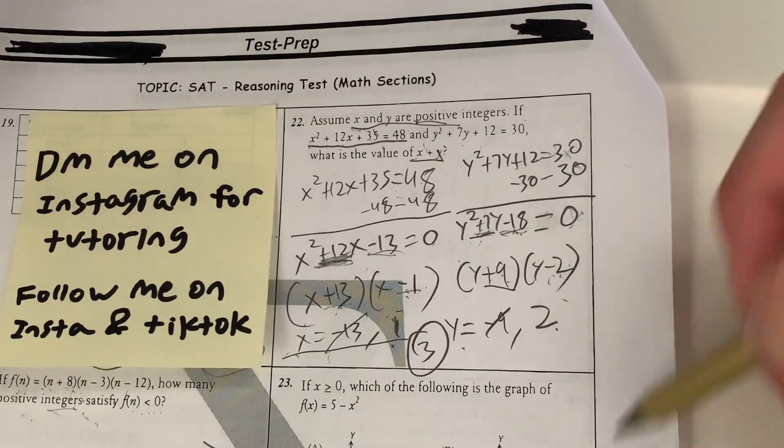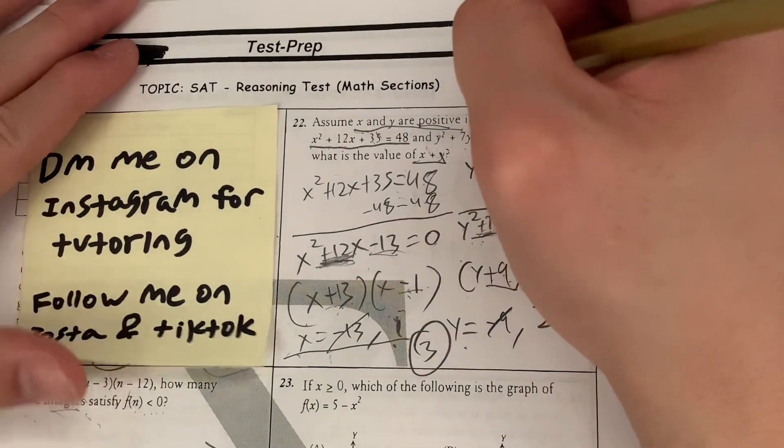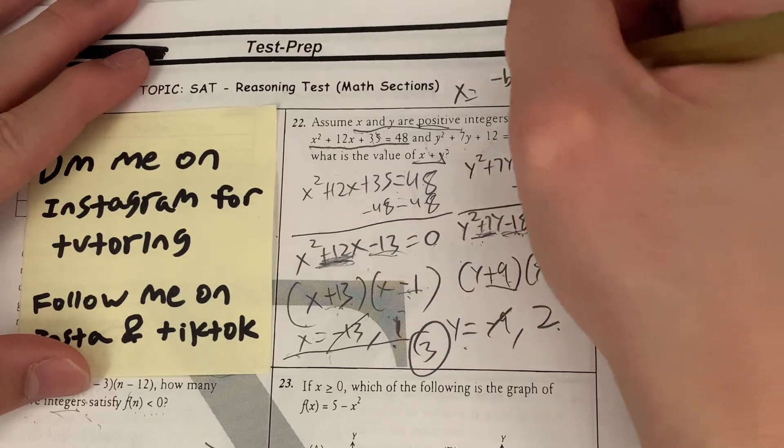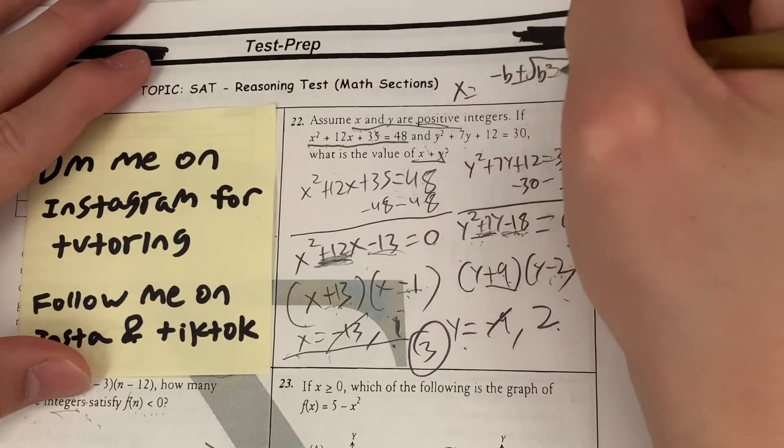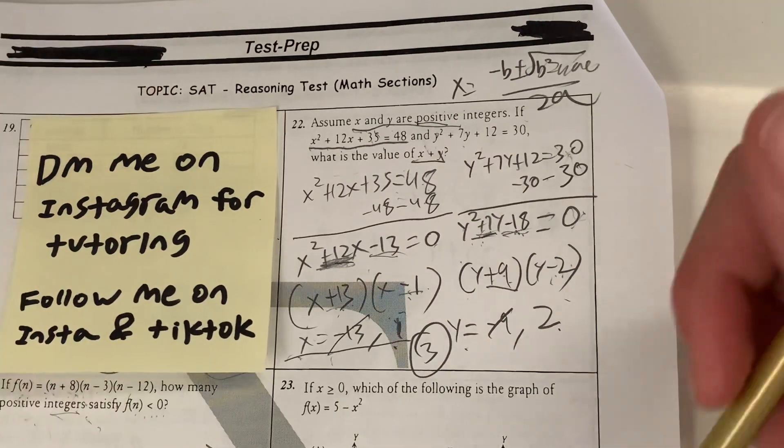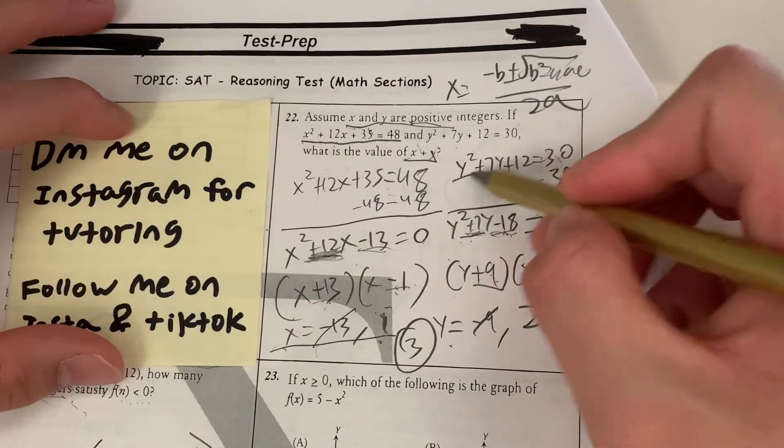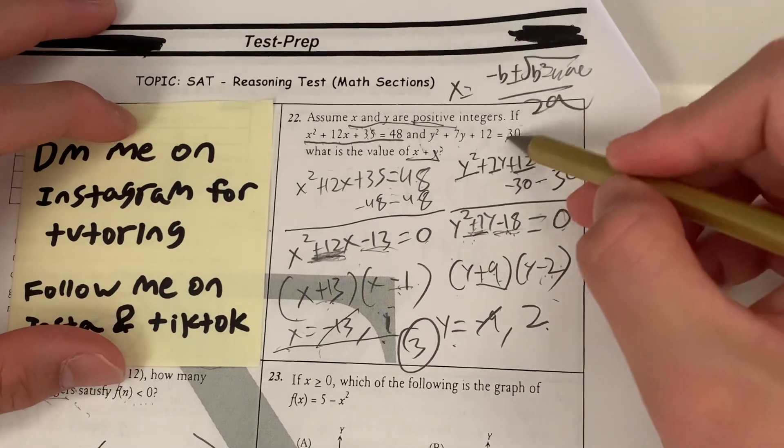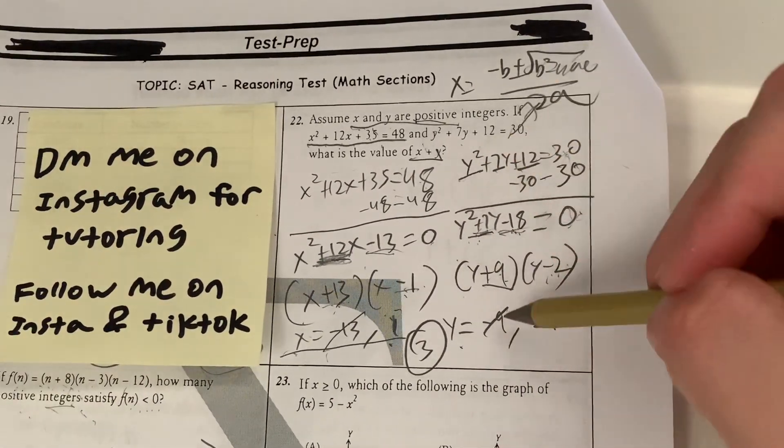If you don't know how to factorize, don't worry. You can use the quadratic formula, which is just x equals negative b plus or minus the square root of b² minus 4ac over 2a. This method requires a little bit more work, but it's easier if you don't know how to factor. You just plug in the value of a, b, c into your quadratic, and you'll get the values of y.